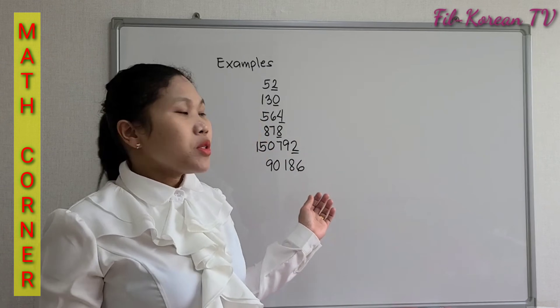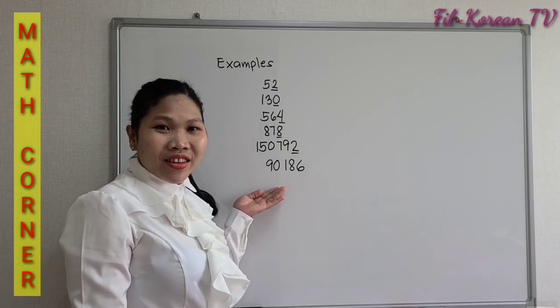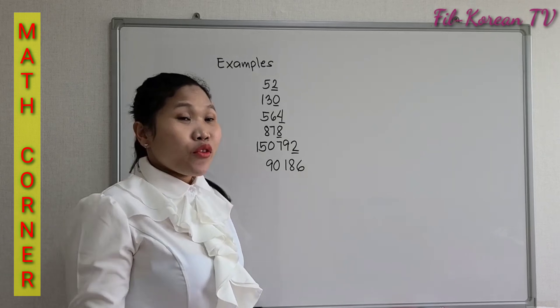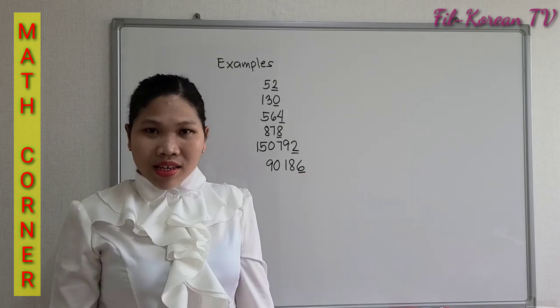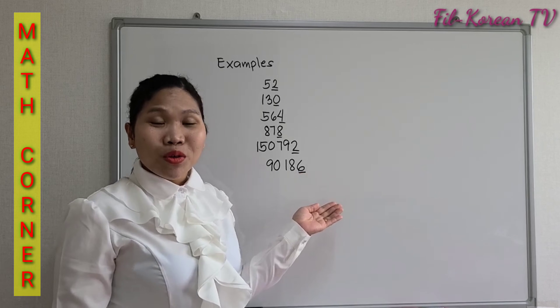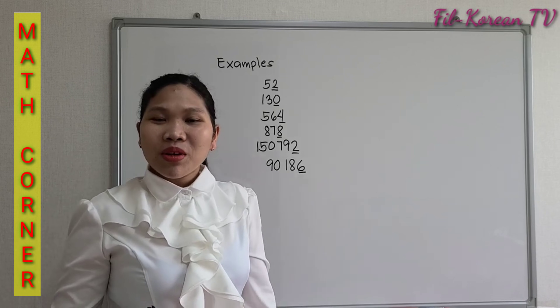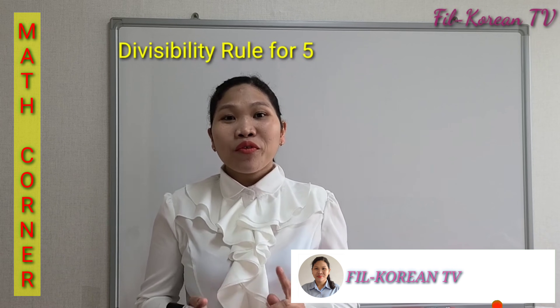Another example: 90,186. The number 90,186 is an even number — it ends in 6. Therefore, it is also divisible by 2. That is the divisibility rule for 2. Let's proceed now to the divisibility rule for 5.